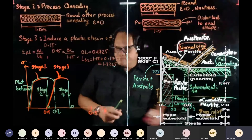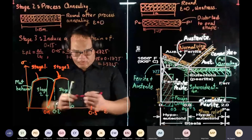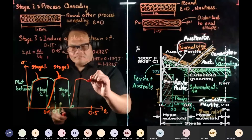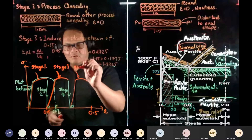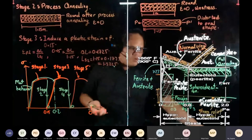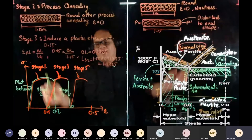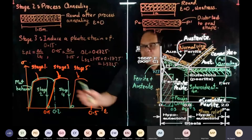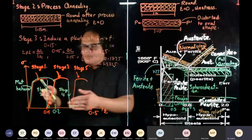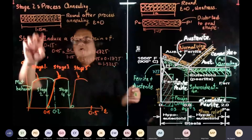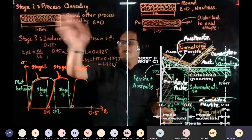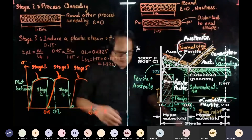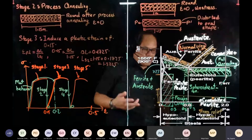After that you deform it again — this is your stage five. So through process annealing, eventually you'll get to a strain of 0.5 without fracture. That is the purpose of process annealing. When you process anneal, you rearrange the microstructure, the strain becomes zero again, and then you can pull it to become a lot longer. If you don't do this, it will fracture.